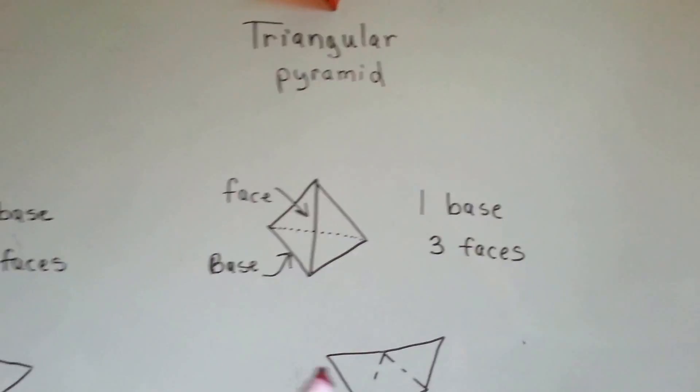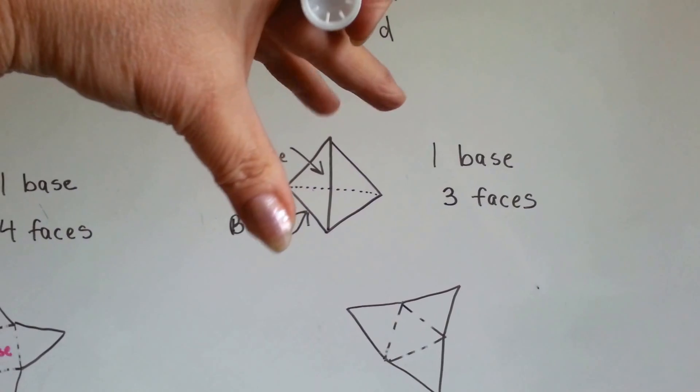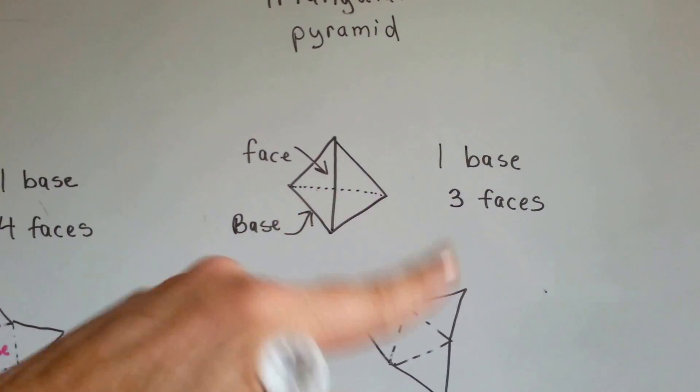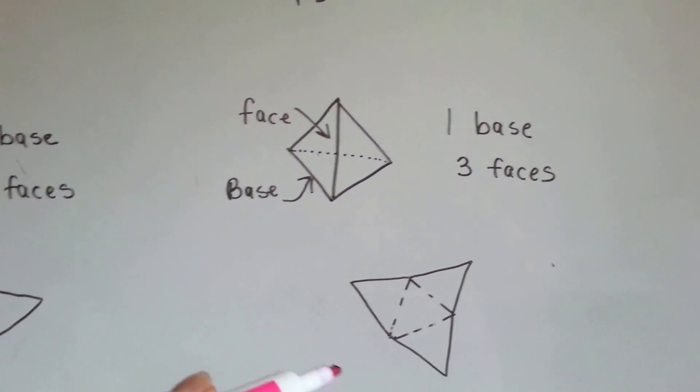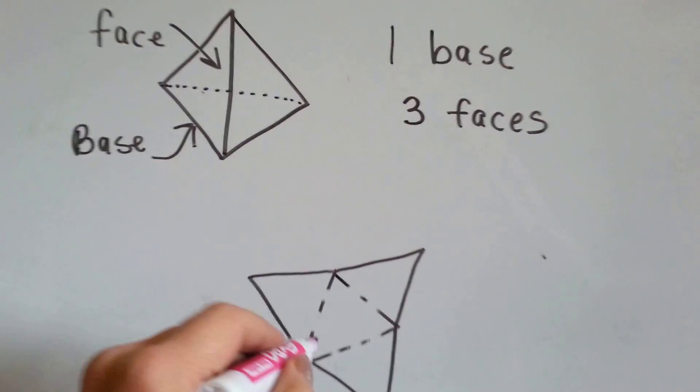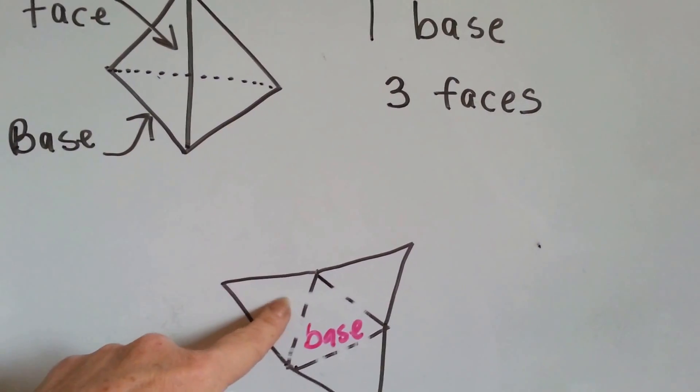The triangular pyramid, its base is a triangle. And if you were to open this up here and unfold these sides down, it would look like this. Well, it would look better than this. My drawing's a little crooked. But this would be the base. And these would be the faces.